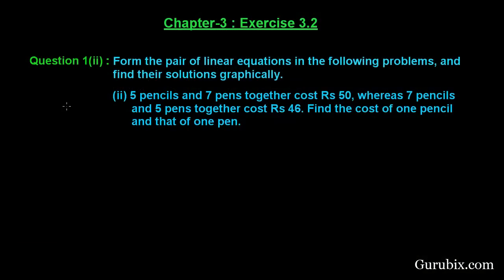Welcome friends. Let us solve the second part of question number 1 of exercise 3.2 of chapter 3. The question says: form the pair of linear equations in the following problem and find their solution graphically. The problem is: 5 pencils and 7 pens together cost Rs. 50, whereas 7 pencils and 5 pens together cost Rs. 46. Find the cost of 1 pencil and that of 1 pen. This is a very interesting question, let us solve it.